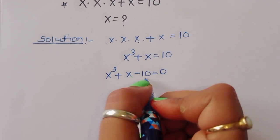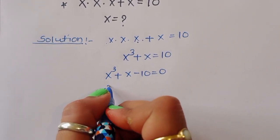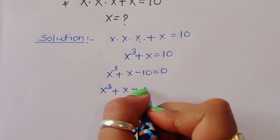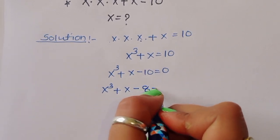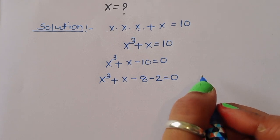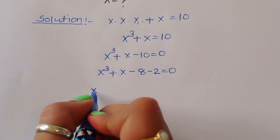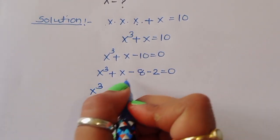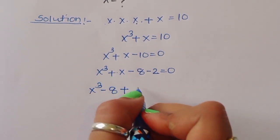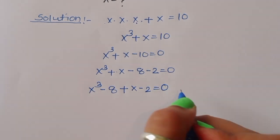Now we split minus 10 as minus 8 minus 2, so x cubed plus x minus 8 minus 2 is equal to 0. Rearranging the terms: x cubed minus 8 plus x minus 2 is equal to 0.